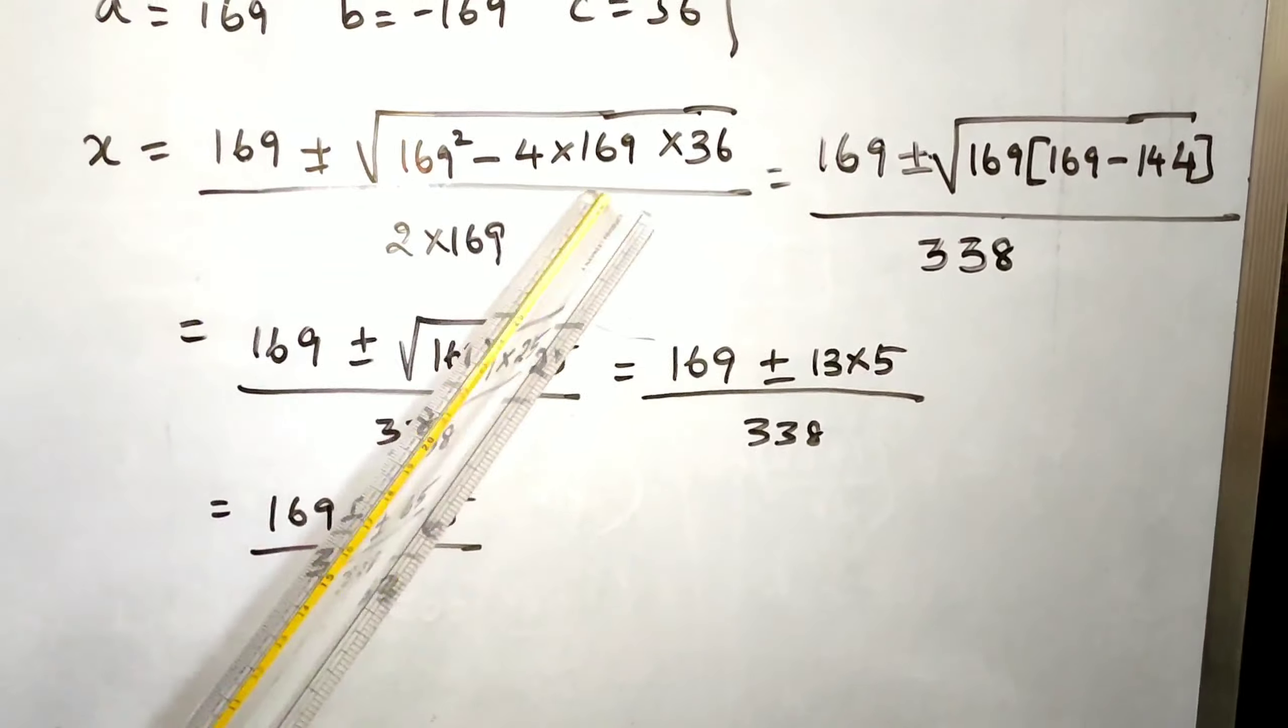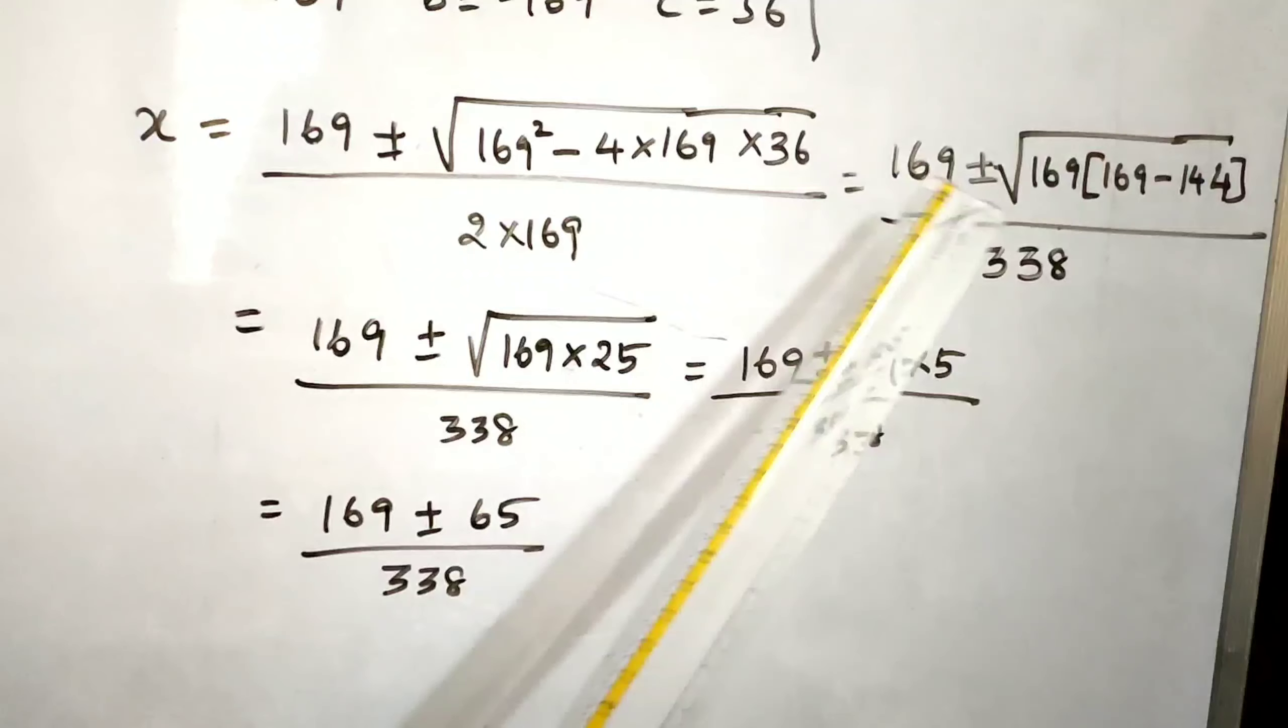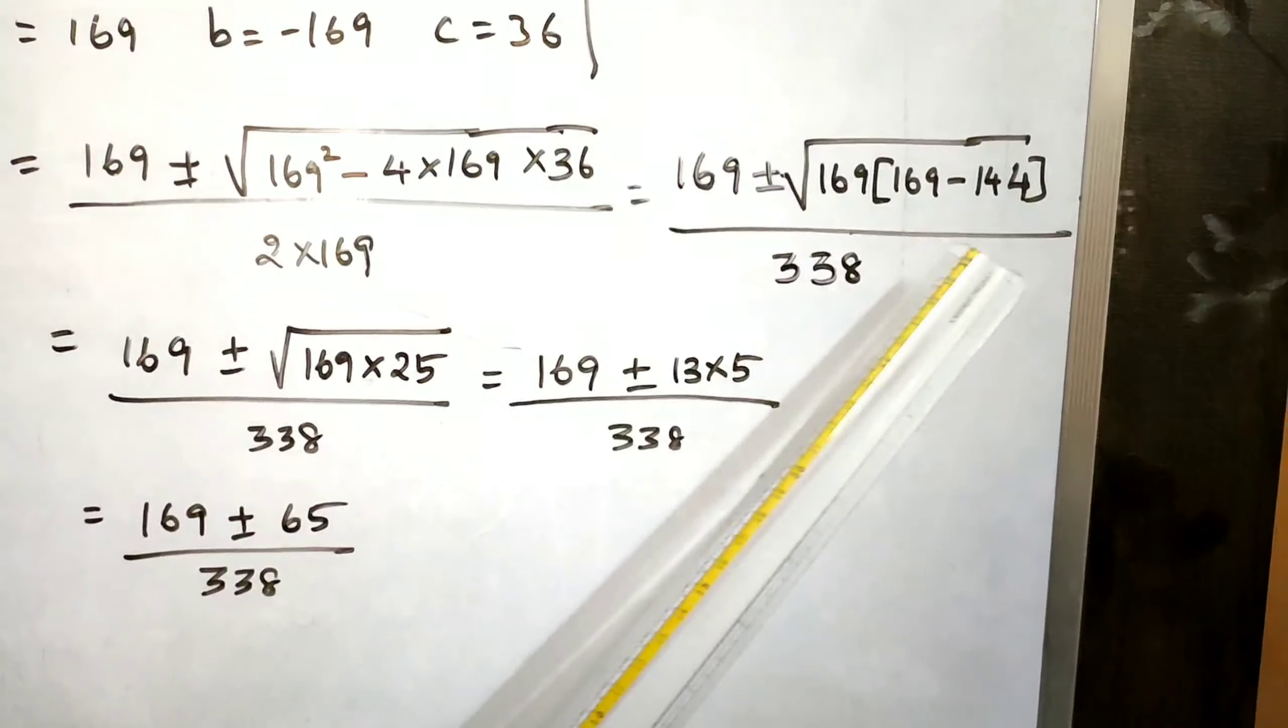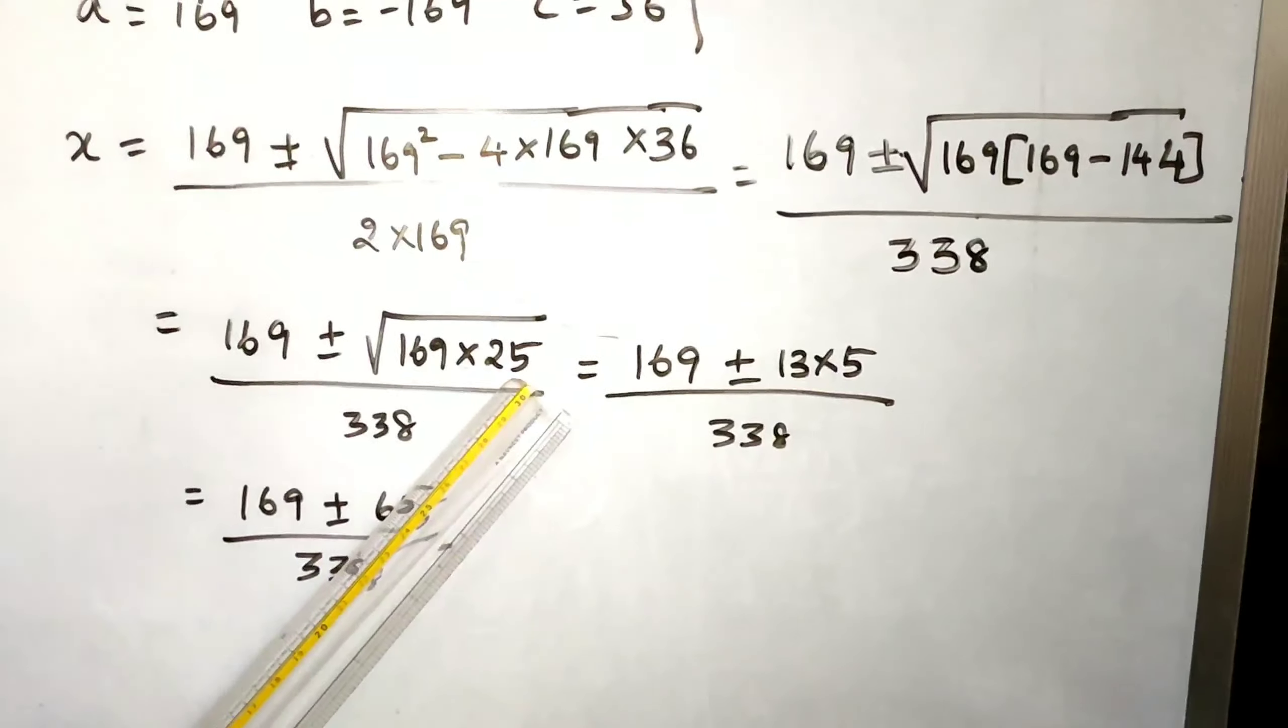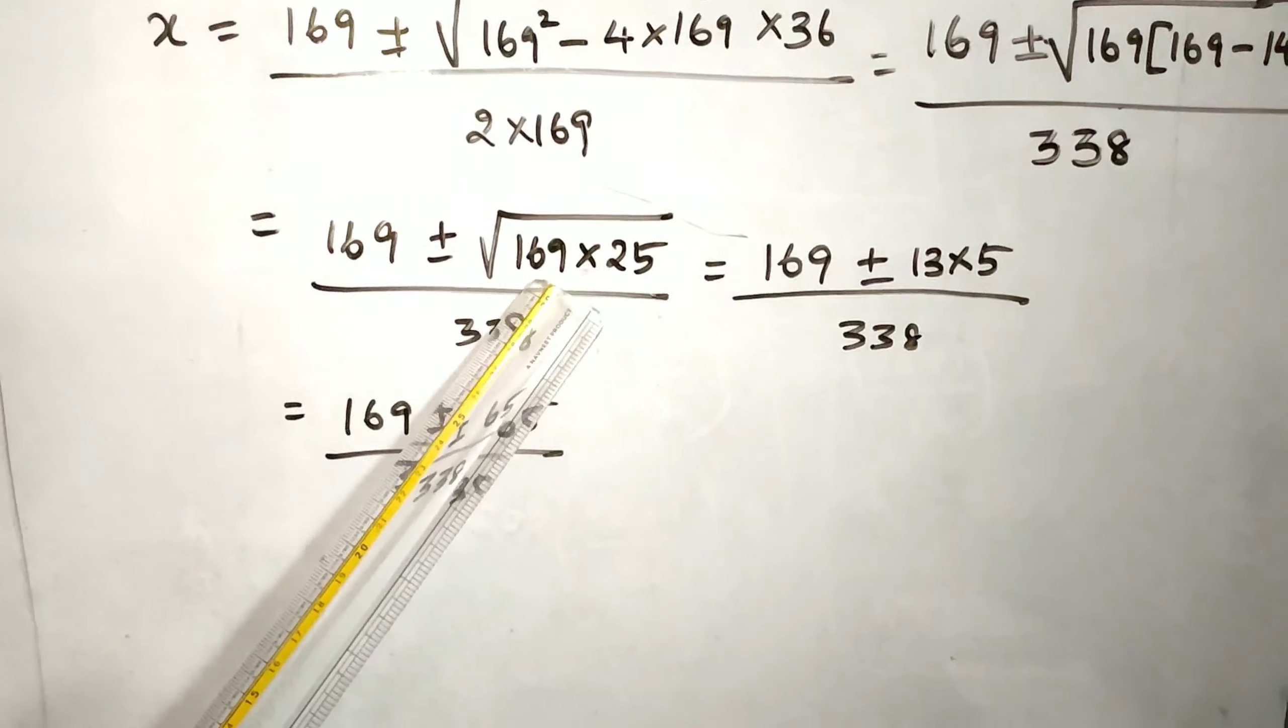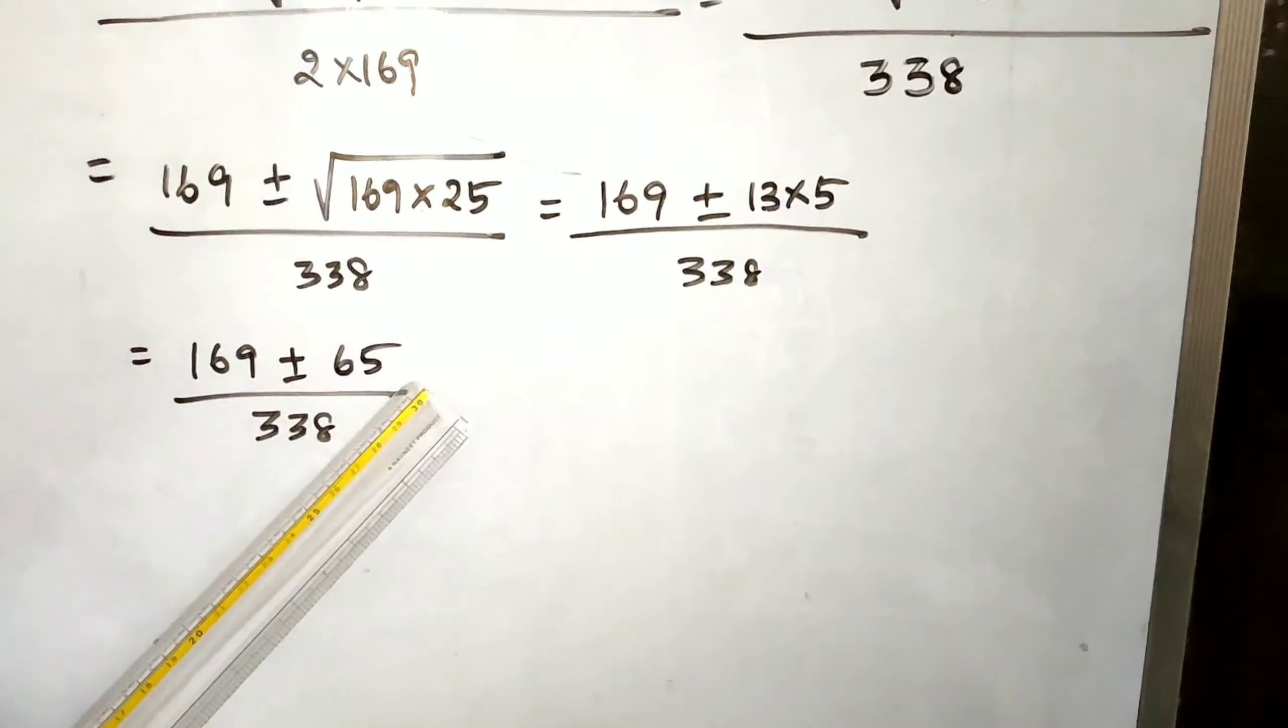Inside this bracket, take 169 outside. Remaining 169 is there minus, remaining these two things. 4 times 36 is 144. 169 minus 144 is 25. Now take the root. Root 169 is 13, root 25 is 5. 13 times 5 is 65.